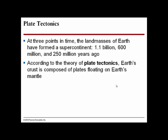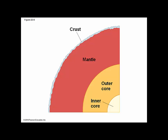At three points in time, Earth's land masses formed a supercontinent: 1.1 billion years ago, 600 million years ago, and most recently 250 million years ago, forming Pangaea. According to the theory of plate tectonics, Earth's crust is composed of plates floating on the Earth's mantle. The continents are like bits of foam floating on water, moving around on top of the molten mantle. The inner core of the Earth is an iron-nickel core with blazing heat and intense pressure.